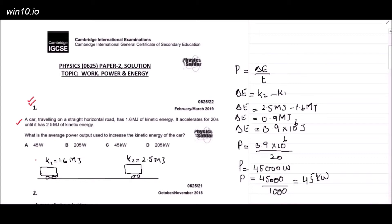Let's draw the situation and try to understand. In the beginning, the car is moving with kinetic energy 1.6 megajoules. Because of the power of the car engine, it accelerates for 20 seconds and its kinetic energy increases to 2.5 megajoules. Now the question is, we need to calculate the average power.